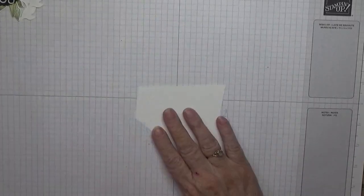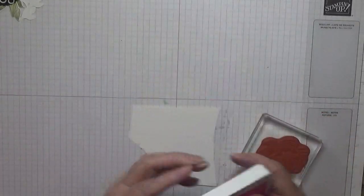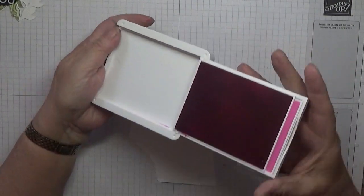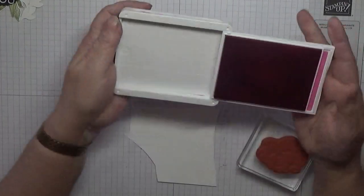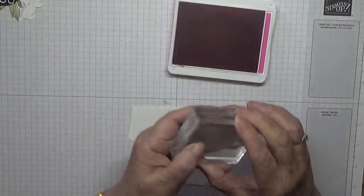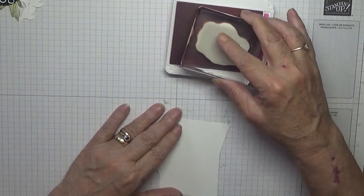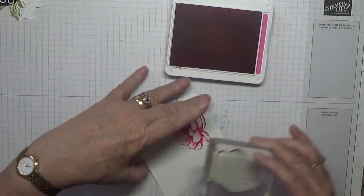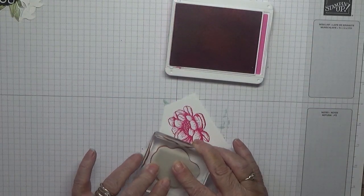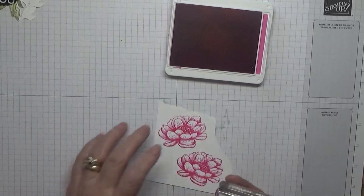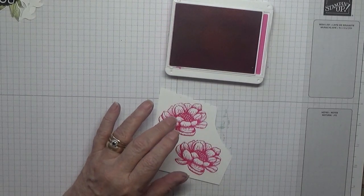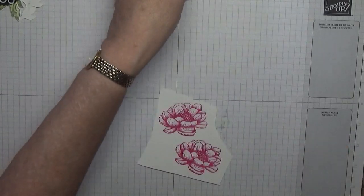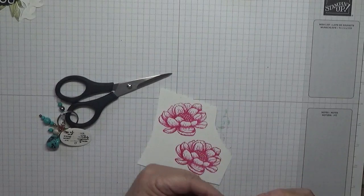Pattern paper. It's not on very well. It's stuck down now. We need to stamp and cut out our flower. Now this is Magenta Madness and we're going to stamp two flowers just like that, and then we're going to cut them out by hand.